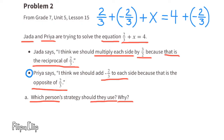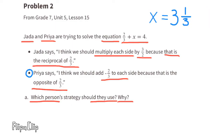Adding the additive inverse of two-thirds, or adding negative two-thirds to both sides, will get x by itself because two-thirds minus two-thirds cancels out. You're left with x equals four plus negative two-thirds, or four minus two-thirds, which equals three and one-third. So x equals three and one-third.